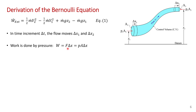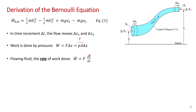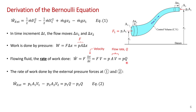Recall that work is force acting through a distance — f times delta-x — and in a fluid flow the force is the pressure times the cross-sectional area. So work is pressure times area times displacement. But since we have a flowing fluid, it's not the work we're after but the rate of work — work-dot. That's force times distance per unit time, and distance per unit time is velocity. So the rate of work is the pressure force times the local velocity, which is pressure times area times velocity. We can further simplify by noting that area times velocity is the volume flow rate Q, which is constant. So the rate of work done by the pressure force is just the local pressure times the volume flow rate.